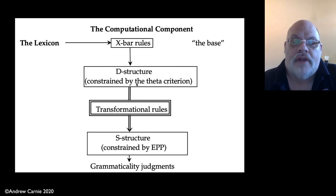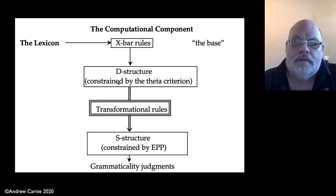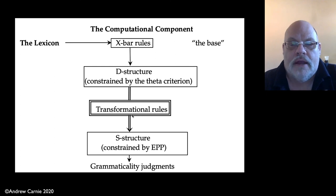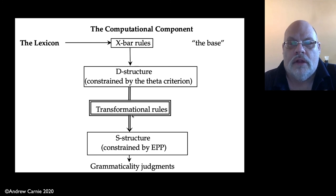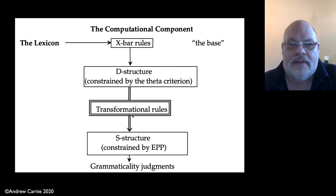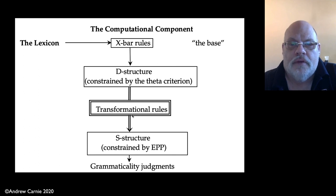Where do transformational rules apply? Transformational rules apply after the D-structure. The D-structure, which historically was called the deep structure, is the underlying base structure that we create, and then the transformational rules move things around. So far we have two transformational rules: V to T movement and T to C movement. We also have two insertion rules: the expletive insertion rule, which inserts into the specifier of TP, and the do insertion rule, specific to English, which inserts into null T heads when you need to move them.